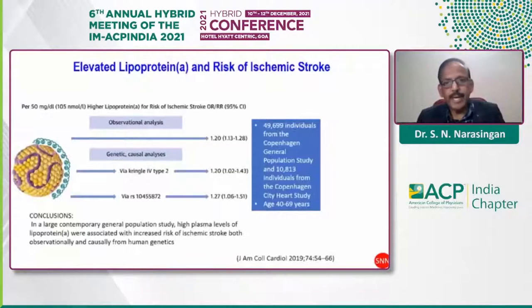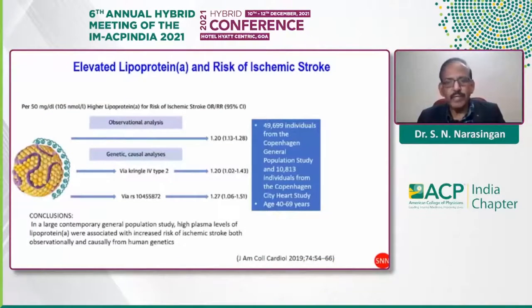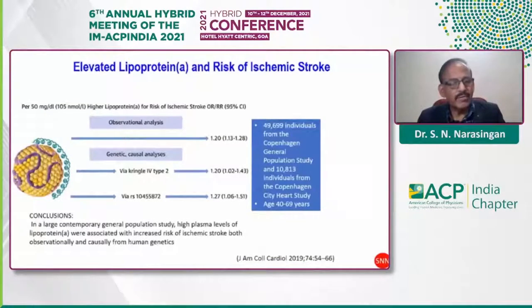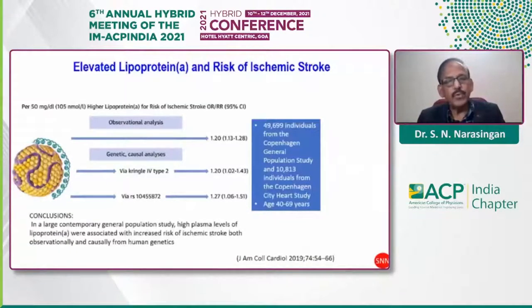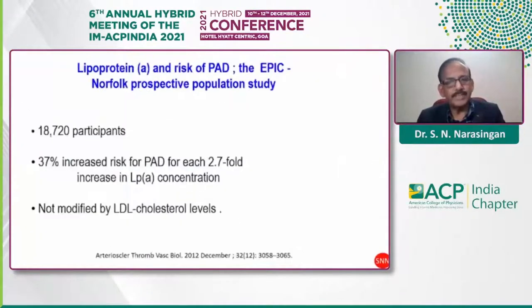Regarding the link between Lp(a) and risk of ischemic stroke, a large contemporary general population study of nearly 50,000 individuals clearly indicated that very high plasma levels of lipoprotein(a) are associated with increased risk of ischemic stroke, both observationally and from human genetics data.